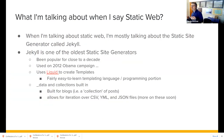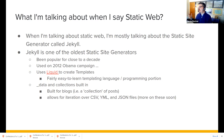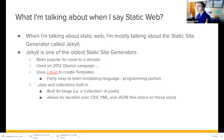Jekyll has been popular for about a decade — it was used on the 2012 Obama campaign. One of its attractive features is the Liquid language, created by Shopify, which is a fairly easy-to-learn templating language. It handles the programming portion — the for loops and if-then statements that create templates that build the site. There's also a built-in data and collections function. Jekyll was built initially to be a blog, so it has a collection of posts built in. That collection-at-its-center concept is incredibly important for archives and libraries.